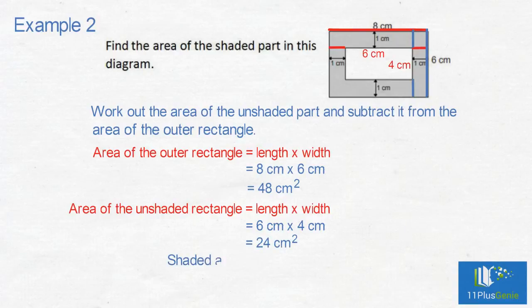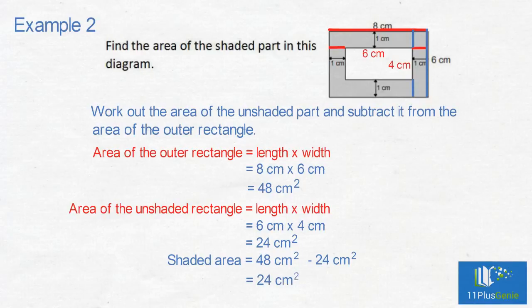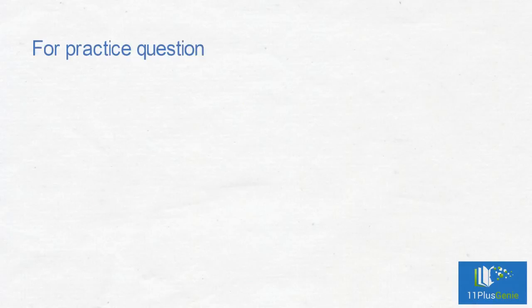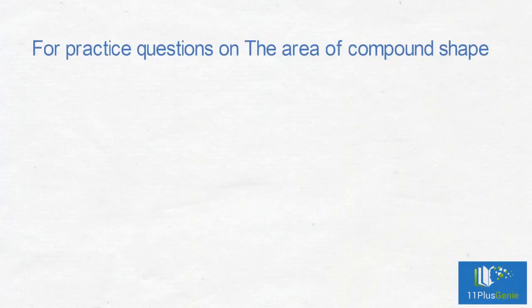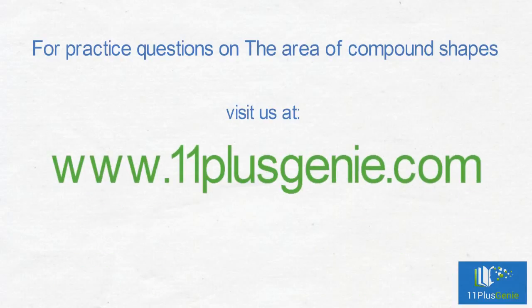The shaded area equals 48cm squared take away 24cm squared, which equals 24cm squared. For practice questions on the area of compound shapes, visit us at www.11plusgenie.com.